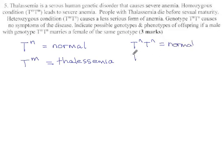But it turns out, if you have T^N T^M, neither of these completely dominates. You end up with mild thalassemia. They say less serious. I'm going to use the word mild, even though this version is still no fun.